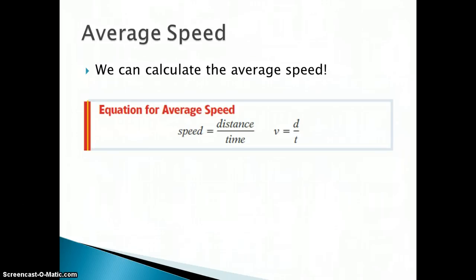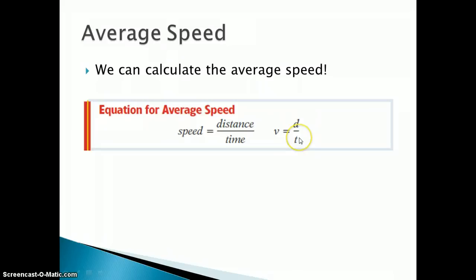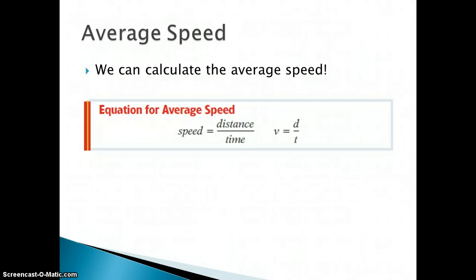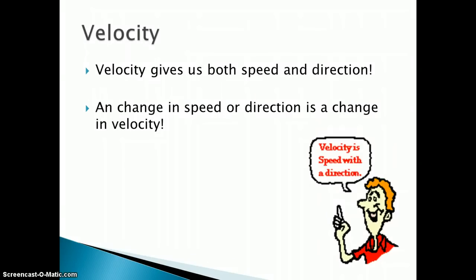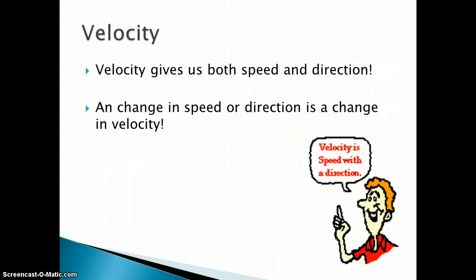Here we can calculate average speed. Speed is distance divided by time. Usually instead of using S for speed, we're also talking about velocity. Velocity is the same thing — distance divided by time — only velocity is going to have a direction associated with it. So we use v equals d over t. Velocity gives us speed and direction — it tells us which direction we're moving and at what speed. If you are going at the same speed and change direction, you have a change in velocity. Any change in the speed, any change in direction, or both is a change in velocity.